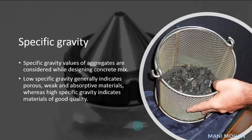Specific gravity values are used while designing the concrete mix and are a means to decide the suitability of the aggregate. Low specific gravity generally indicates porous, weak, and absorptive materials, whereas high specific gravity indicates material of good quality. The specific gravity of major aggregates falls within the range of 2.6 to 2.9.